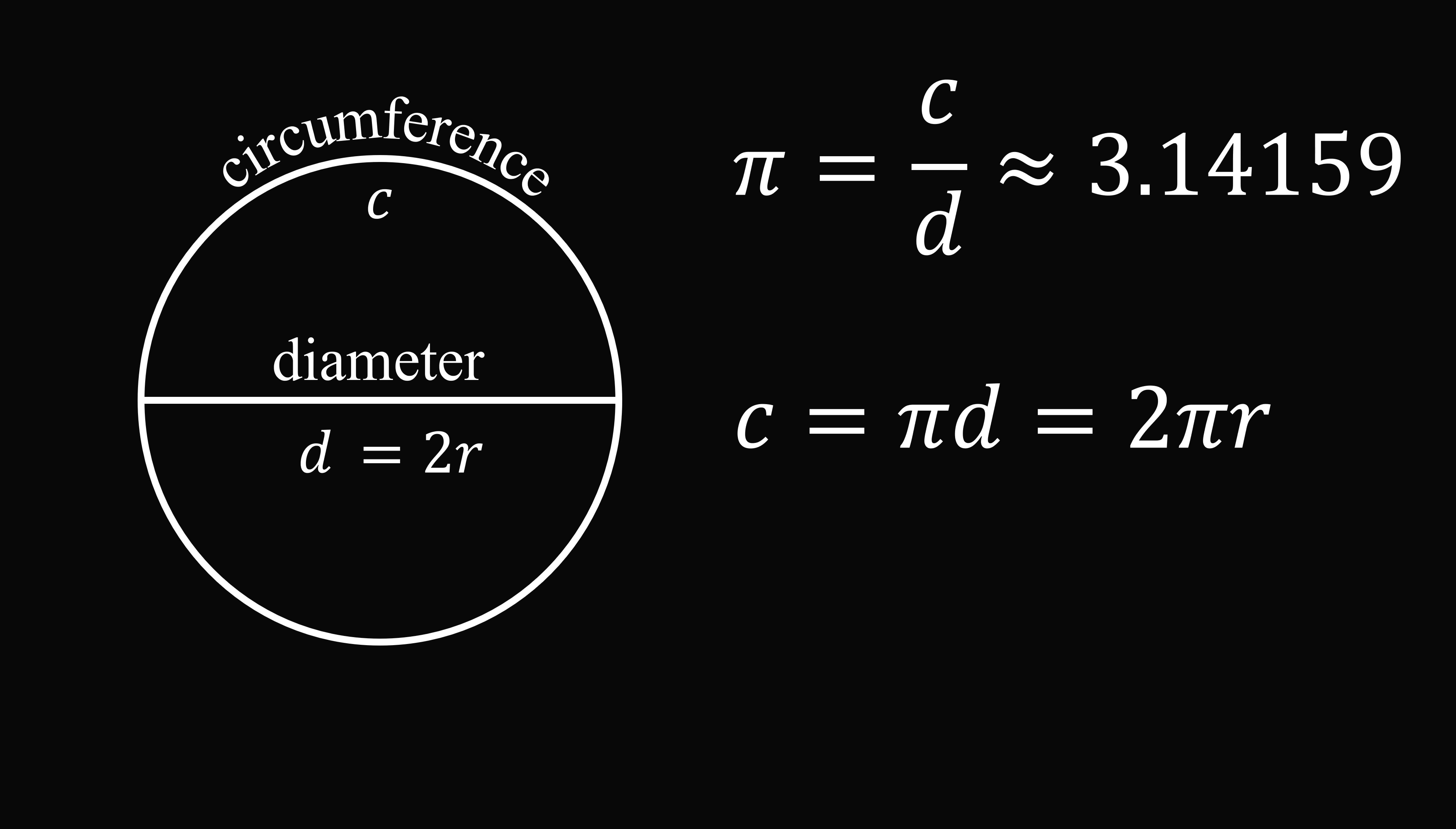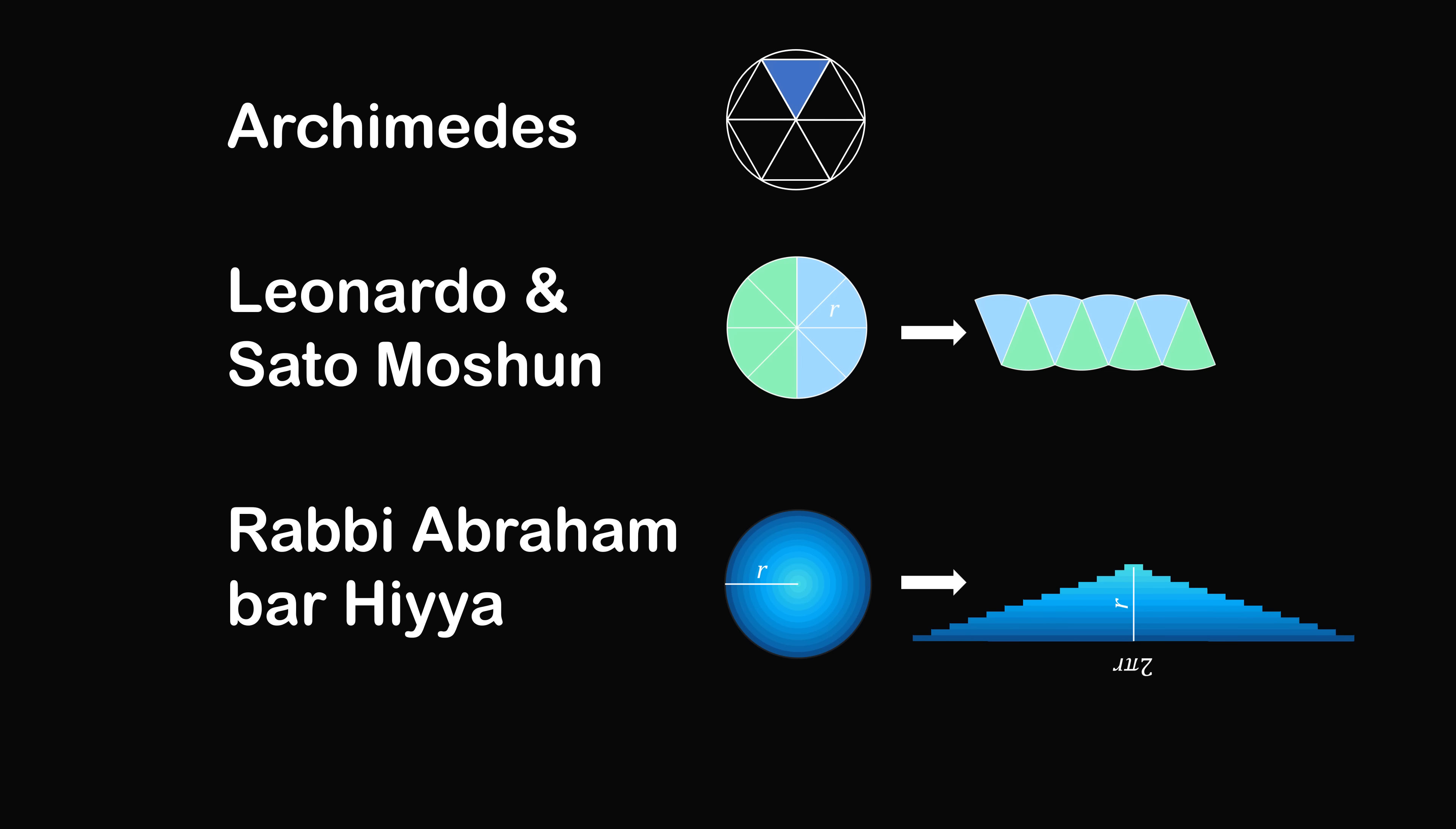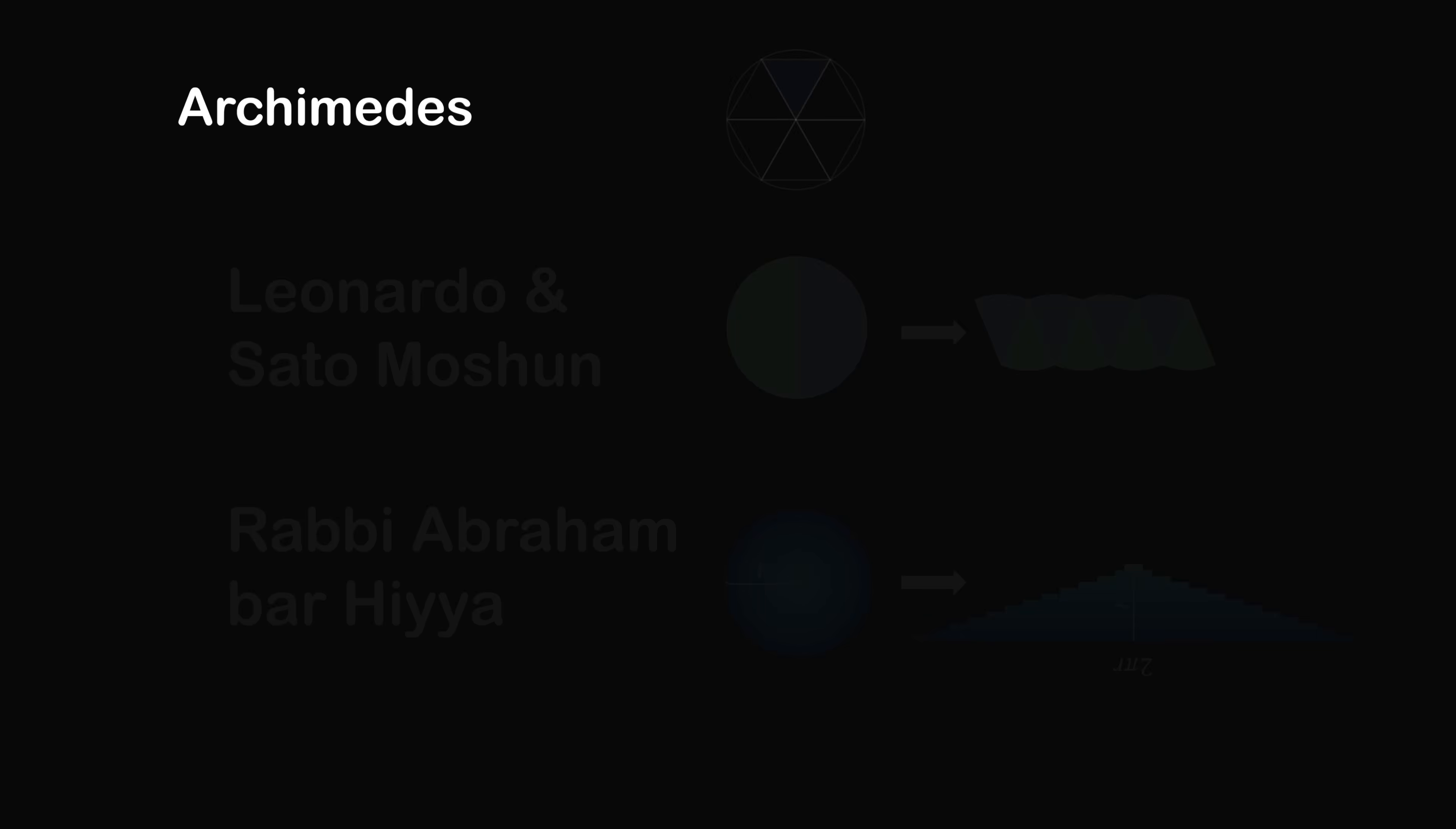So now, let's go over how the ancients calculated the area of the circle. I'll present three different methods. One method comes from Archimedes, another method from Leonardo da Vinci and Sato Moshin, and the final method comes from Rabbi Abraham Bar Hiya. So let's get started with Archimedes.